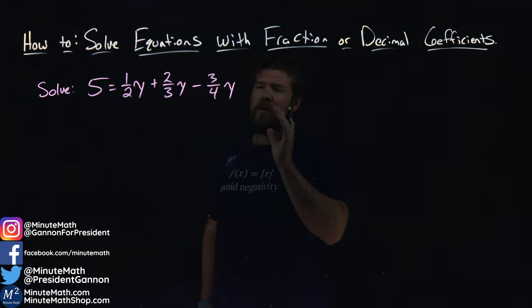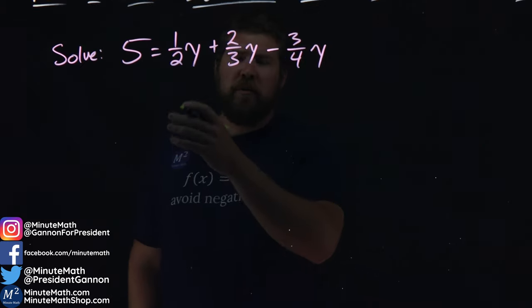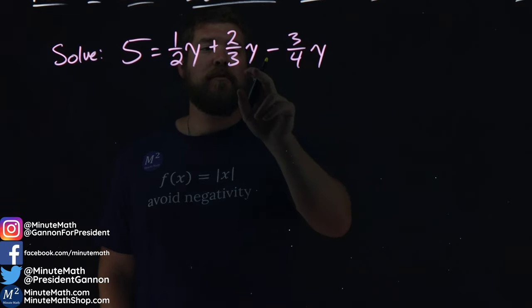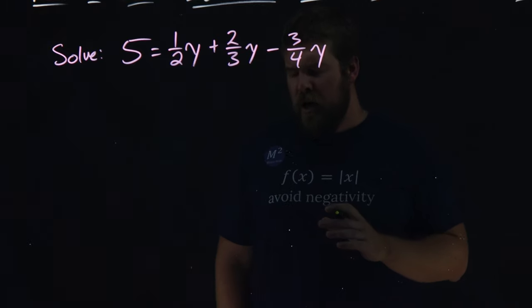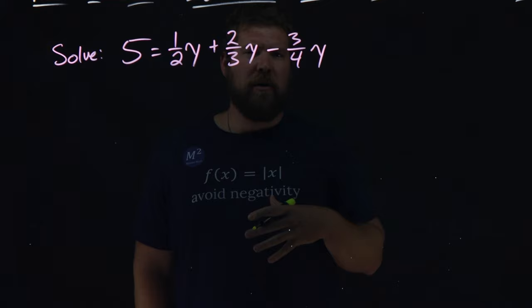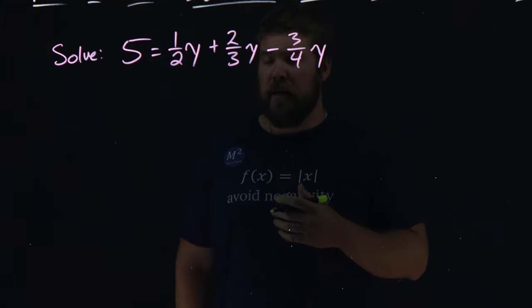To do this, we're going to use an example to explain our steps. We want to solve this equation: 5 equals 1 half y plus 2 thirds y minus 3 fourths y. Well, it's kind of confusing. We have a lot of fractions here, and it's kind of hard to combine them. So, I want to employ a different technique here.